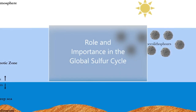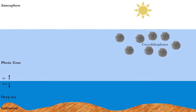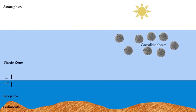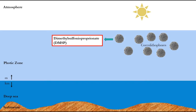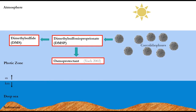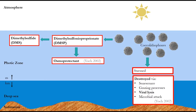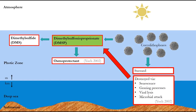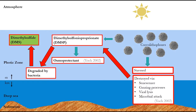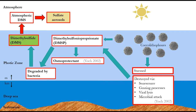Coccolithophores not only impact climate in relation to the carbon cycle but also via the global sulphur cycle. Coccolithophores such as E. huxleyi directly link to climate change as they are intense producers of the chemical DMSP. It is proposed that coccolithophores produce DMSP as an osmoprotectant to regulate their internal osmotic environment. DMSP is the precursor of dimethyl sulphide (DMS), a gas which plays a significant role in regulating Earth's climate. When the coccolithophores are stressed or destroyed via senescence, grazing processes, viral lysis, or microbial attack, DMSP enters the environment and is degraded by bacteria, producing DMS. The emissions of DMS by the coccolithophores oxidise, forming sulphate aerosols in the atmosphere, which is a highly efficient cloud condensation nucleus.